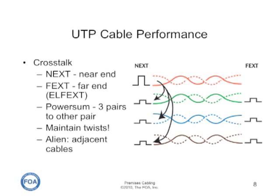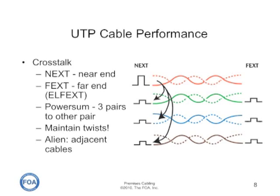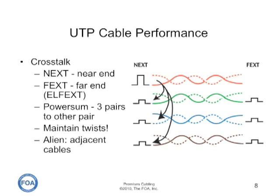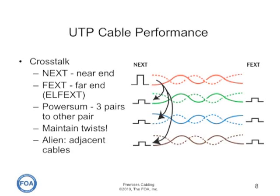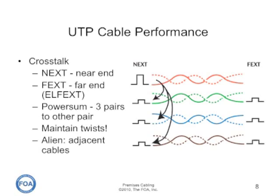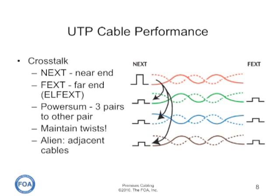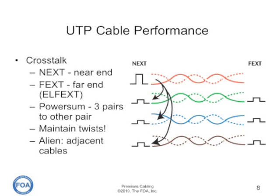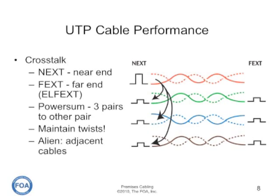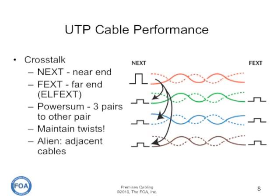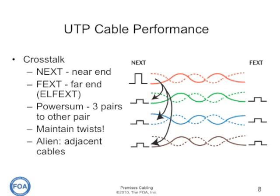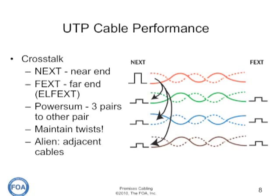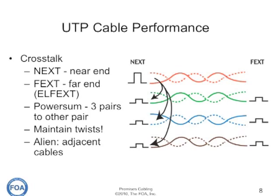Crosstalk refers to the coupling from an active pair transmitting signals to another pair in the cable. It's typically tested as NEXT on the near end and FEXT on the far end, because it's mainly at the connections where crosstalk is a problem. Power sum crosstalk, which has been required for all cables since category 5, refers to the coupling of signals from three pairs to the other pair. It's necessary because these cables now transmit signals on all four pairs at once. It's important at all the jacks, plugs, and punch downs to maintain the twists as close as possible, because that's where most crosstalk occurs.